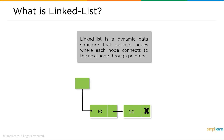Similar to arrays, linked lists also store homogeneous type of elements. That is, if you declare a linked list of float data type, you can only store float elements in it — you cannot store any other data type like character or string.